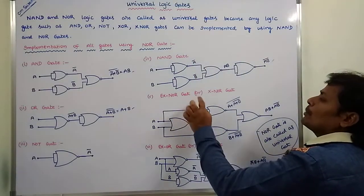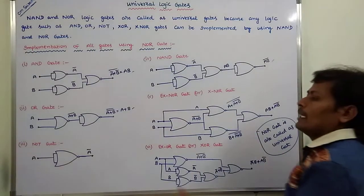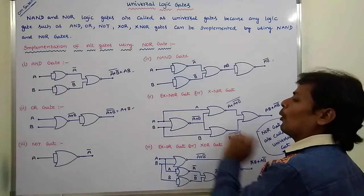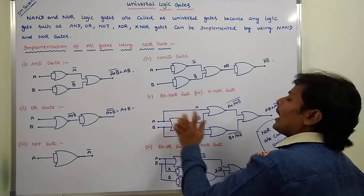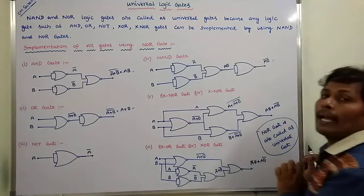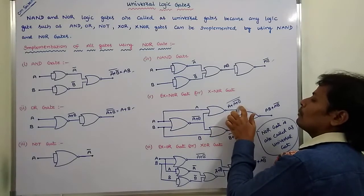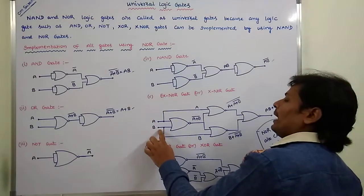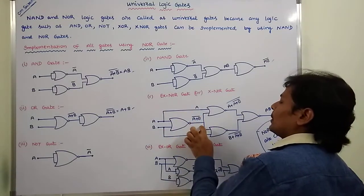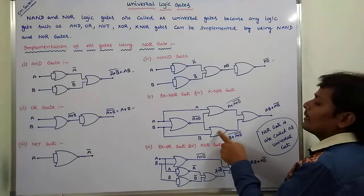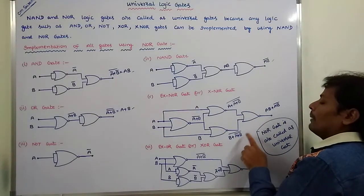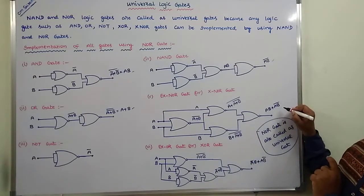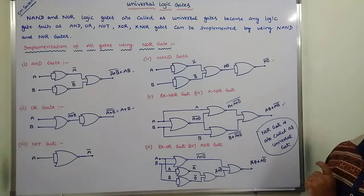Next one, exclusive NOR gate or XNOR gate. A and B are two inputs applied to the NOR gate, then we are getting A plus B whole bar. Again, input A and A plus B bar are applied as two inputs for another NOR gate, then we are getting A plus A plus B whole bar whole bar. Next, B input and this output can be sent as two inputs for another NOR gate, then we are getting B plus A plus B bar whole bar. So then we are getting AB plus AB whole bar. So this is the output of exclusive NOR gate.